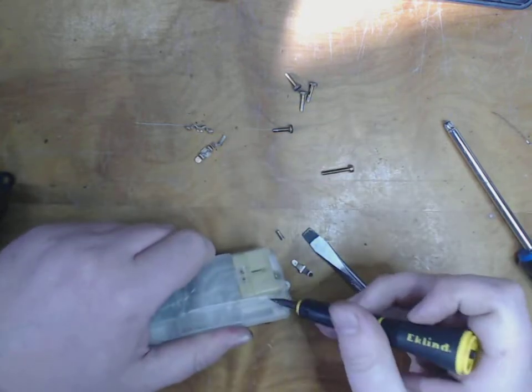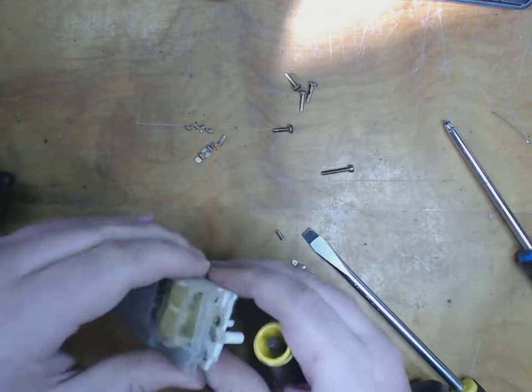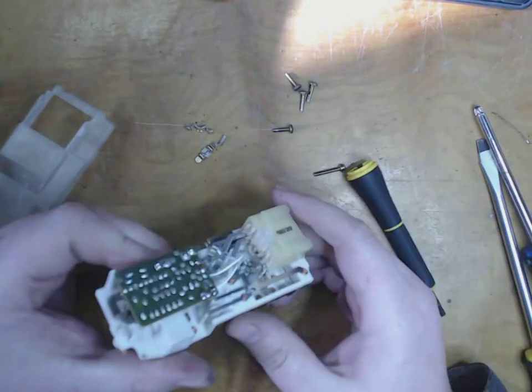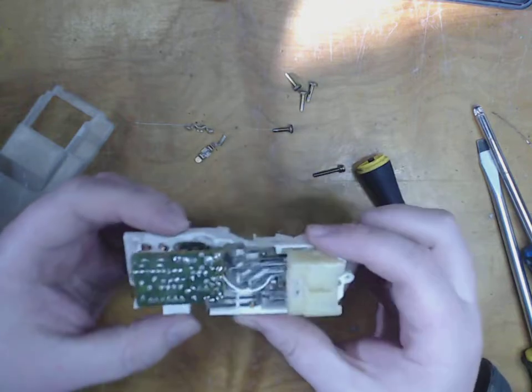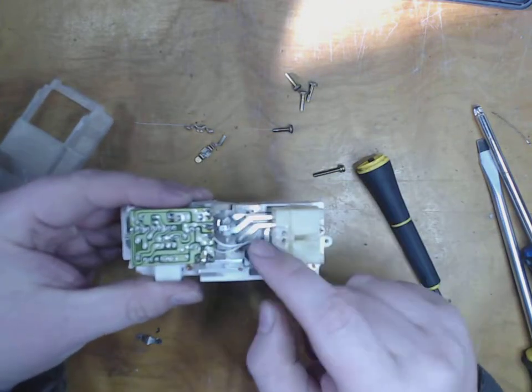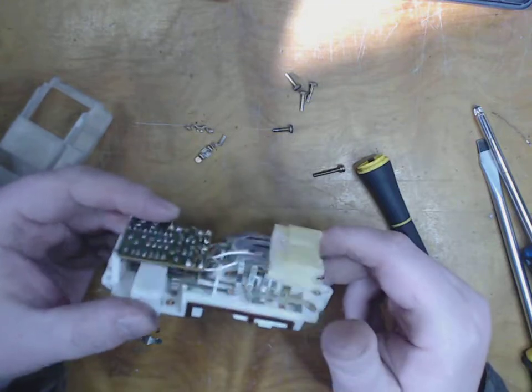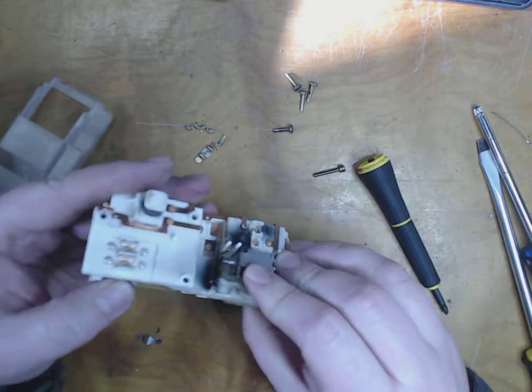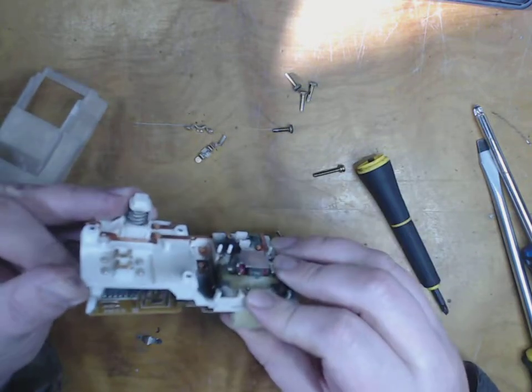That clip just does not want to come on. There we go. So I do see some active circuitry under here. This is kind of interesting the way this is constructed with these big rails. It looks like it's designed for really high current or something. I don't know how much current a window motor draws - it's got to be quite a lot I would think though.